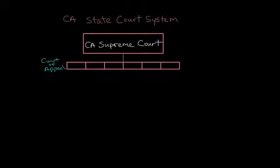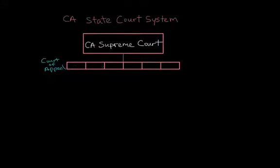There are a few things to note about the Court of Appeal. In the federal court system, the intermediate appellate courts are officially called the United States Court of Appeals for the name of the circuit — for example, the Court of Appeals for the Ninth Circuit. But in the California state court system, we don't call it the Court of Appeals. We call it the Court of Appeal with no S. If you say 'Court of Appeals' in California, people will think it's amateur hour.